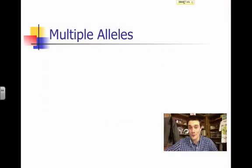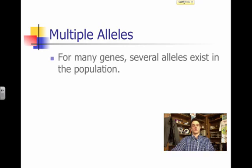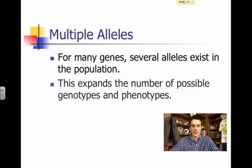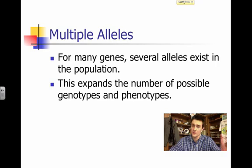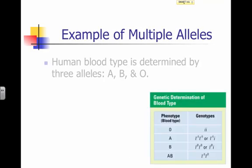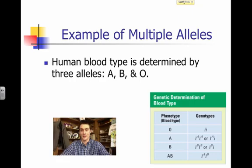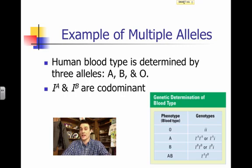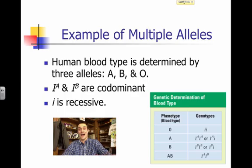Two more complex patterns of inheritance. Multiple alleles is when many genes have several alleles existing in the population, which can greatly increase the number of possible genotypes and phenotypes. One great example is human blood type, determined by three alleles: A, B, and O. A and B are codominant with one another — represented as superscripts on the capital letter I — and O is recessive, with the lowercase i representing the O blood type.